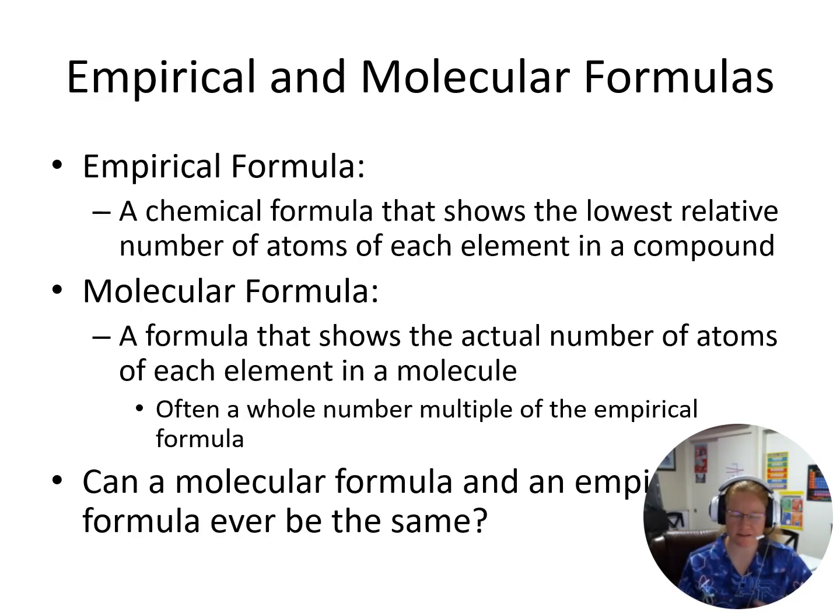So we can compare this to our molecular formulas. So the molecular formula, again, tells us the actual number of atoms. So like I was saying, an empirical formula, the lowest ratio could be CH, but then the molecular formula could be something like C2H2. And so the molecular formula ends up being a whole number multiple of the empirical formula. Like if I take CH and multiply the whole thing by two, I get C2H2. Could we ever have an empirical formula and a molecular formula be the same? Absolutely.